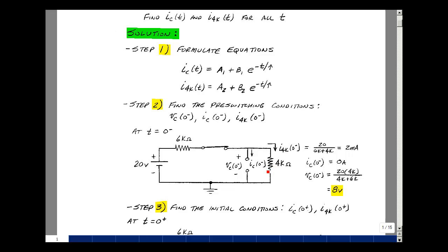I could also use the fact that I know the current that's here too. Using voltage divider, I get 4k over 6k plus 4k times 20, and that's 8 volts, or you could take the 2 milliamps times the 4k and get 8 volts. Almost always more than one way to solve a problem.